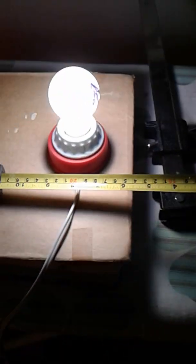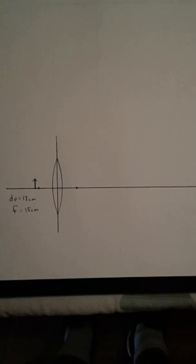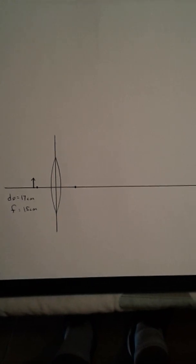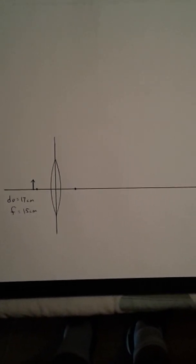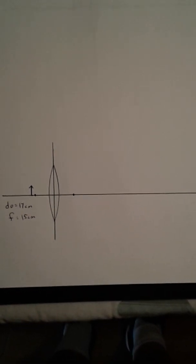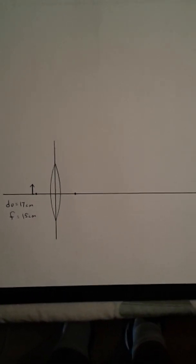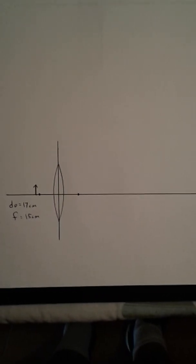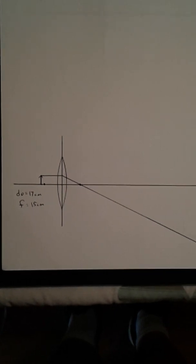From the lens to the front of the bulb, I get about 17 centimeters for DO. I've changed the scale in the diagram because the length to the image is much further. So we're going to put the object just past the focal length of 15 centimeters. It's at 17 centimeters. In parallel, out through the focus.